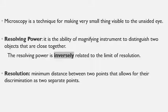Microscope A can resolve the distance between two objects where the distance is 5 micrometres. Microscope B can only observe objects where the distance is up to 10 micrometres. The question is: which microscope has better resolving power? Microscope A must have the resolving power to discriminate between two points at 5 micrometres, so microscope A is better than microscope B.